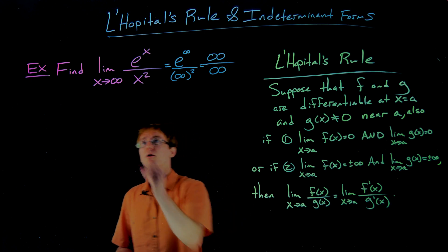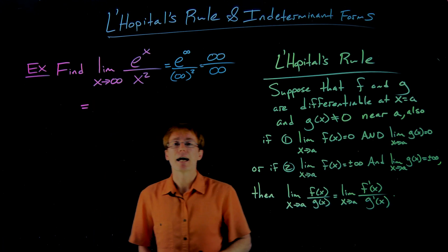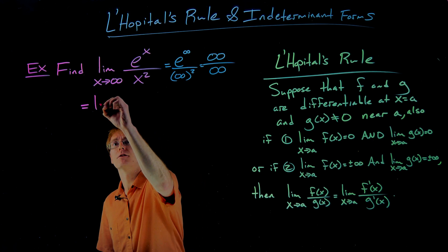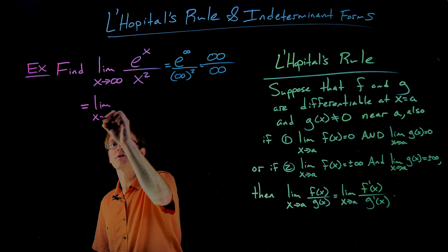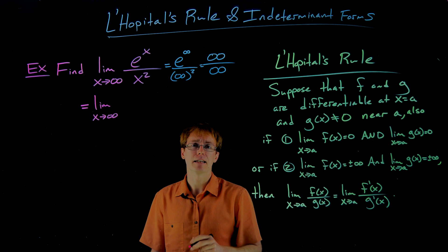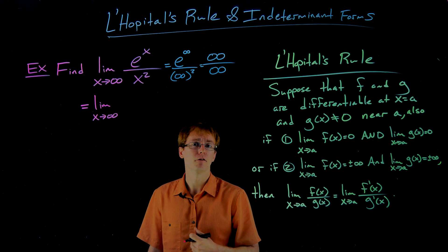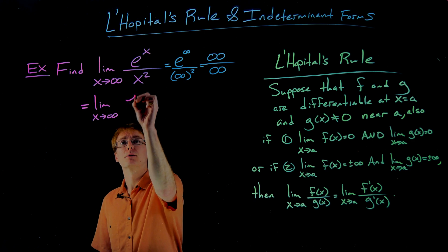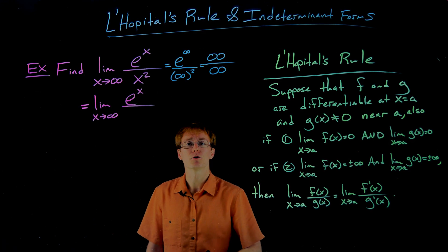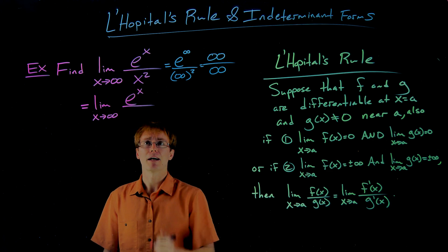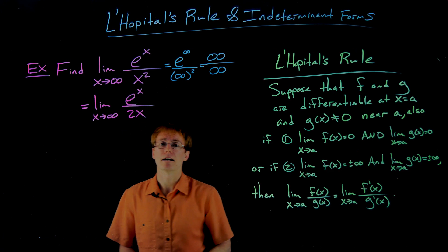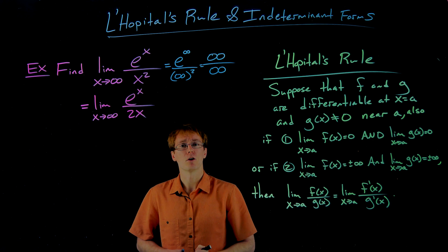According to L'Hôpital's rule, the limit as x approaches infinity of e to the x over x squared is equivalent to the limit as x approaches infinity of the derivative of e to the x divided by the derivative of x squared. The derivative of e to the x is just e to the x — that function equals its own derivative. And the derivative of x squared gives us 2x.